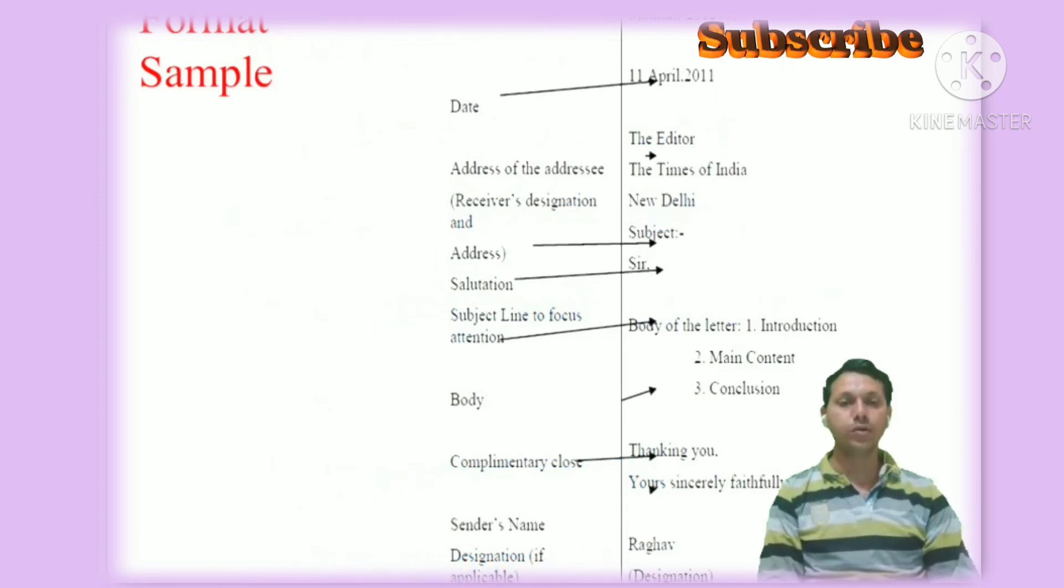This is the format of formal letter writing. This is the sample of formal letter writing. Look at the sender's address here. Below the sender's address, there is a date. You can write this address here also, upper hand corner. Date you can write there. Then address of the addressee here. Subject you can include. Salutation followed by a comma.